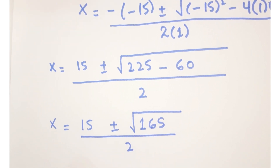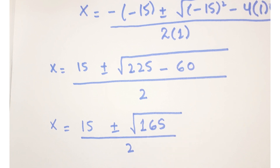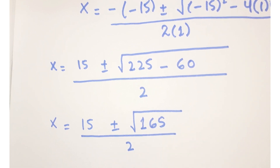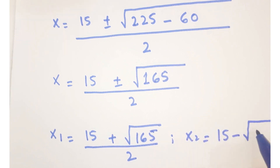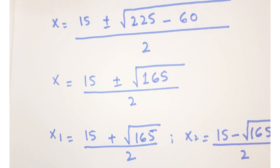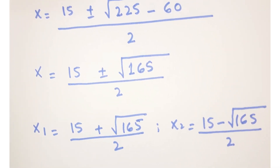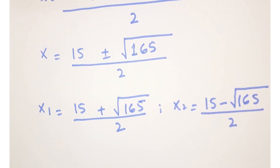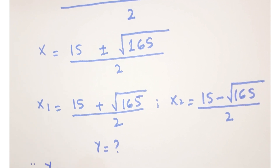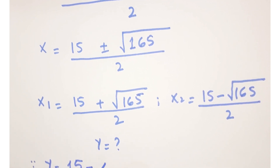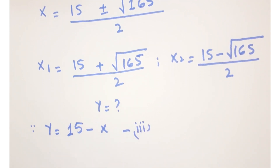There are two possible values of x: x₁ equals (15 plus √165) / 2, and x₂ equals (15 minus √165) / 2. Now for these two possible values we are going to calculate the corresponding values of y.